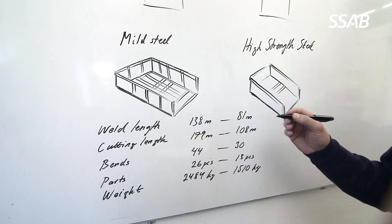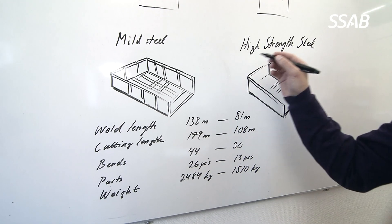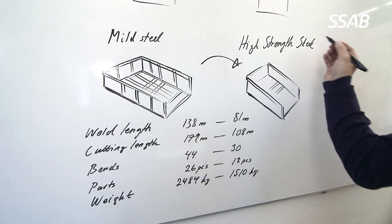Here we have an example of two different tipper bodies. One of them is made in mild steel and one is upgraded in high strength steel.